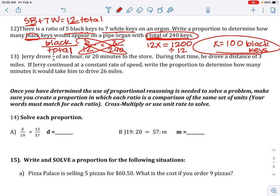Number 13, Jerry drove one third of an hour or 20 minutes to the store. During that time, he drove a distance of 3 miles. If he continued at a constant rate of speed, write the proportion, determine how many minutes it would take him to drive 26 miles. So I'm going to do minutes over miles. Notice I did not say hours. I'm not going to use this hours because, look, it's a fraction. I don't want to deal with it. So I'm going to use the minutes version.